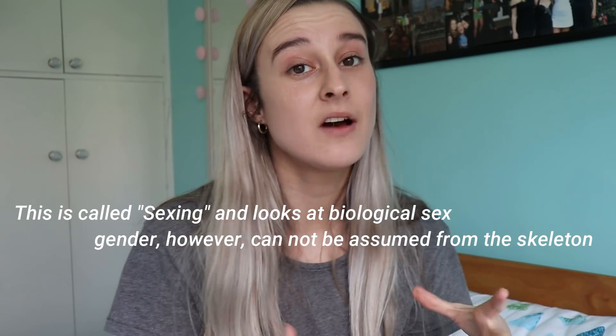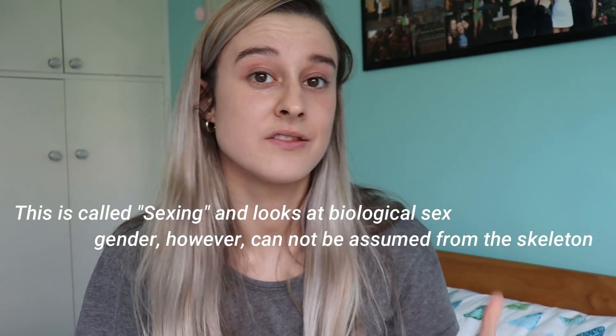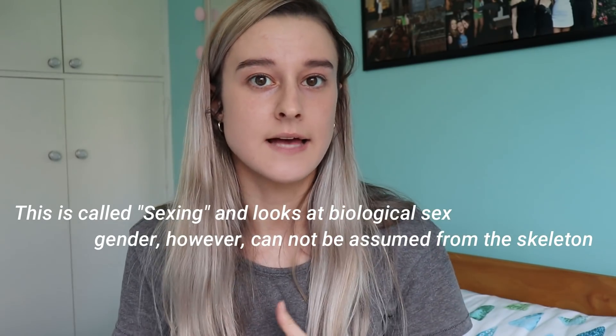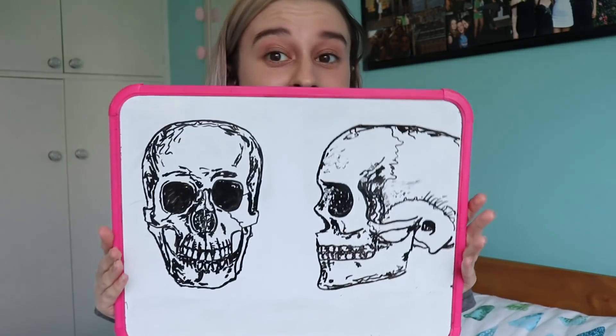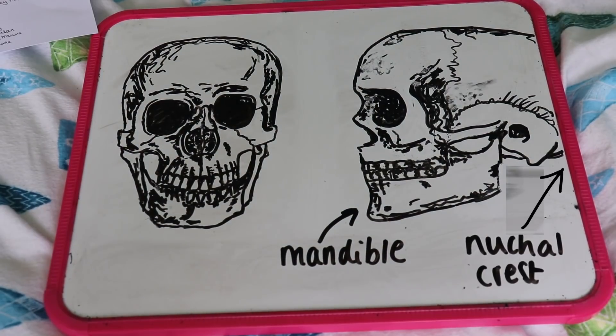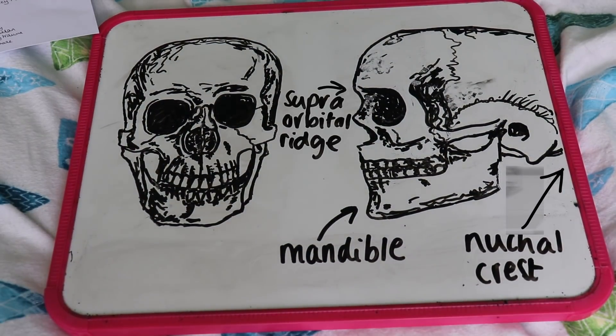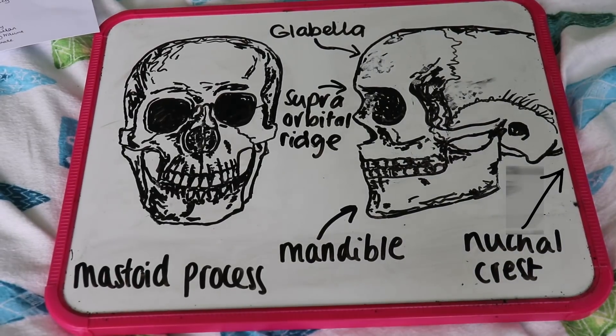The mandible is the lower jawbone, the one that you can move up and down. You can't actually move the maxilla that is attached to the top. Now one thing archaeologists do when they find a skeleton is try and work out whether it is female or male, and to do this you can look at the skull. The main things you need to look at are the mandible, the nuchal crest, the supraorbital ridge, the glabella, and the mastoid process — that little sticky-outy thing.